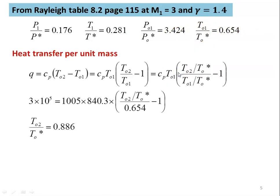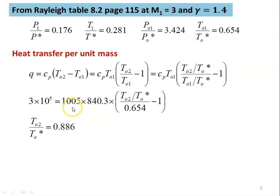The heat transfer per unit mass Q is given by Cp × (T02 − T01), which is modified as Cp × T01 × (T02/T0* divided by T01/T0* − 1). Substituting numerical values: Q = 3×10⁵, Cp = 1005, T01 = 840.3, T01/T0* = 0.654. Solving, we get T02/T0* equal to 0.886.